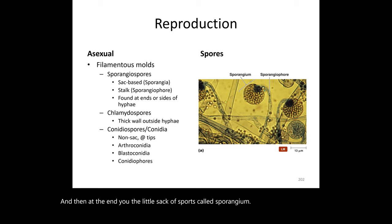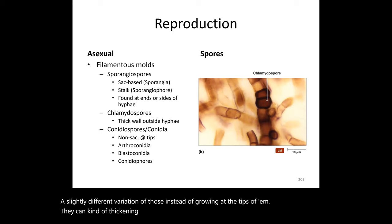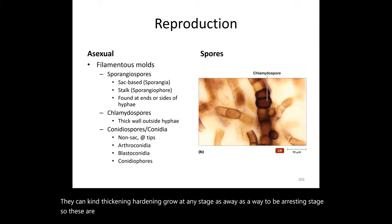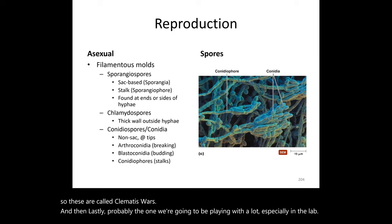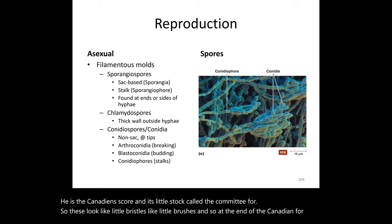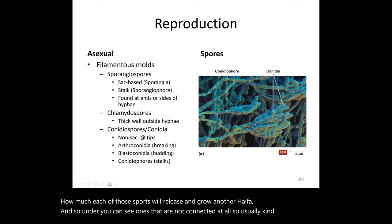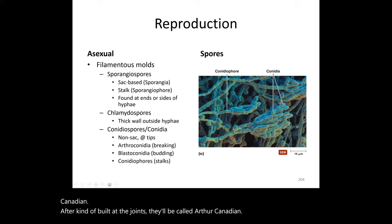Chlamydospores, by contrast, can thicken and harden at any point along the hypha as a resting stage rather than just at the tips. The conidiospores and their stalks — called conidiophores — look like little bristles or brushes. At the end of a conidiophore you see the conidia, each of which can be released and grow into a new hypha. Depending on arrangement: unattached spores are called conidia, those built at joints are arthroconidia, those budding off each other are blastoconidia.